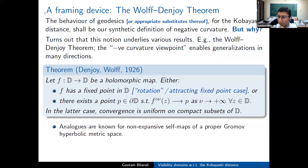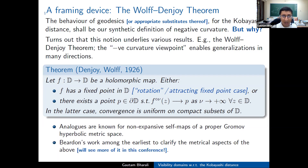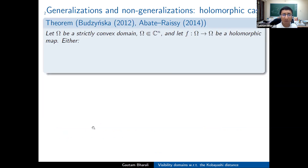The point I want to make is that a negative curvature viewpoint enables the generalization of the classical result in many, many directions. So let's state the classical result — everyone is familiar with it, but let's run through this quickly. If you have a holomorphic self-map of the open unit disk, then you have this sharp dichotomy.